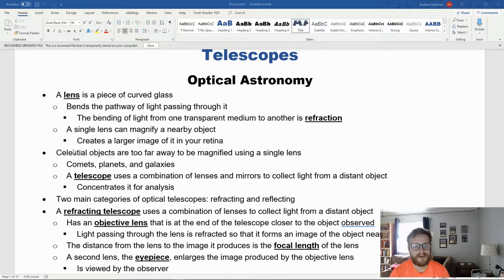First, let's talk about how optical astronomy works and how telescopes work in general. We start with the lens. A lens is a piece of curved glass that bends the pathway of light passing through it. The bending of light from one transparent medium to another is known as refraction. A single lens can magnify a nearby object, creating a larger image on your retina. But when it comes to astronomy, celestial objects are usually far too far away to be magnified using a single lens.